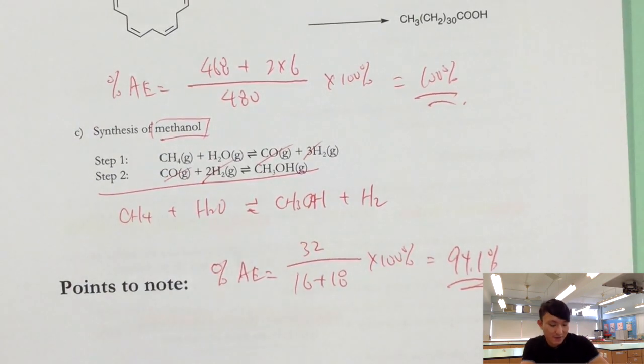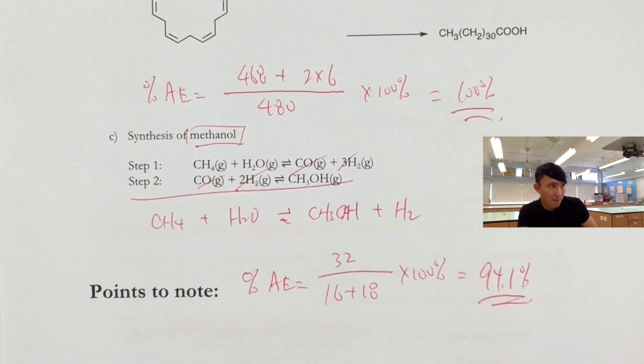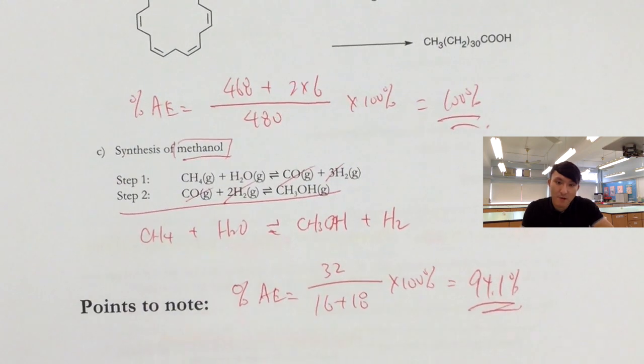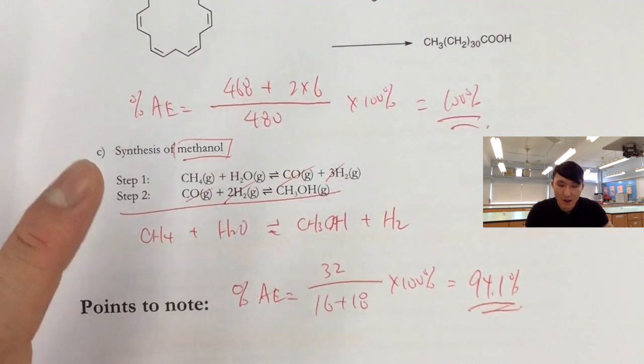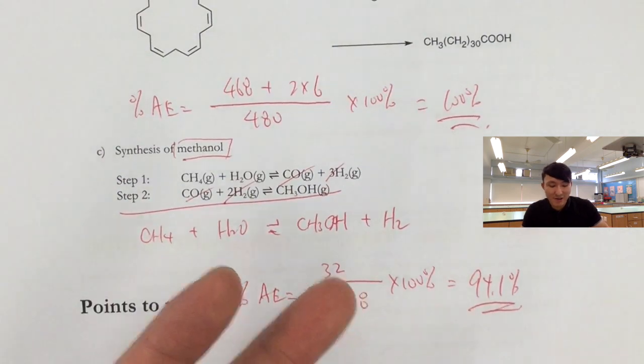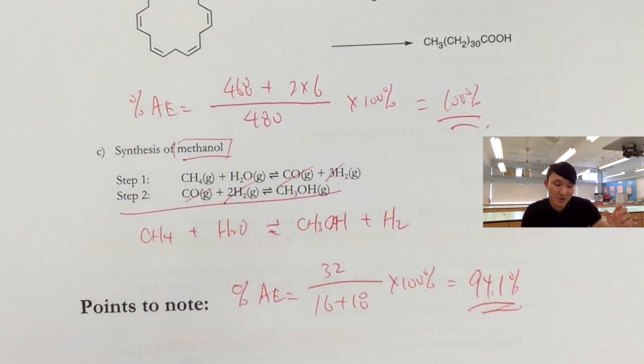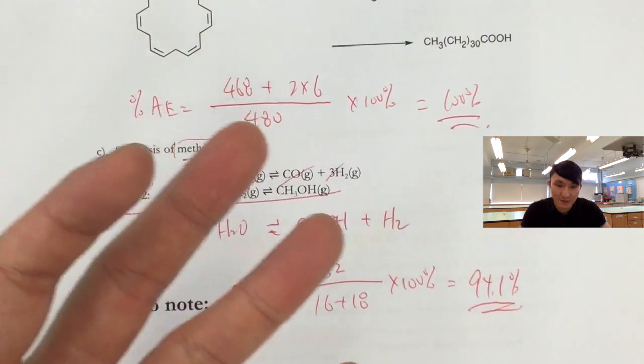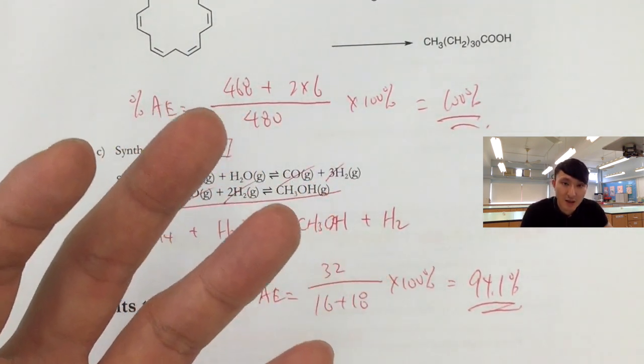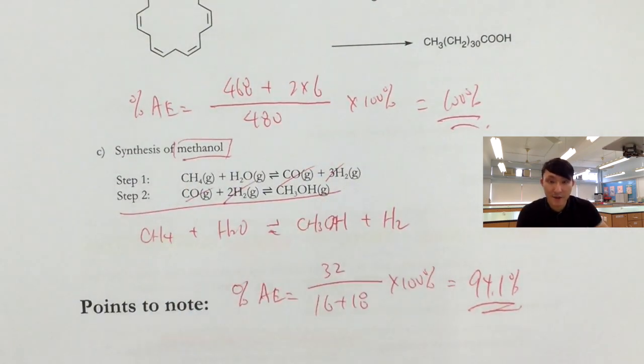So this is how you calculate the atom economy. Very simple. Now you may ask, what do you mean by high atom economy? Is 94.1% high? Now what I can tell you is that 100% is high. And other than 100%, it all boils down to comparison. So there is no scale or guidelines as to what percentage of atom economy is considered as high. We can't say it this way. It's always based on comparison.